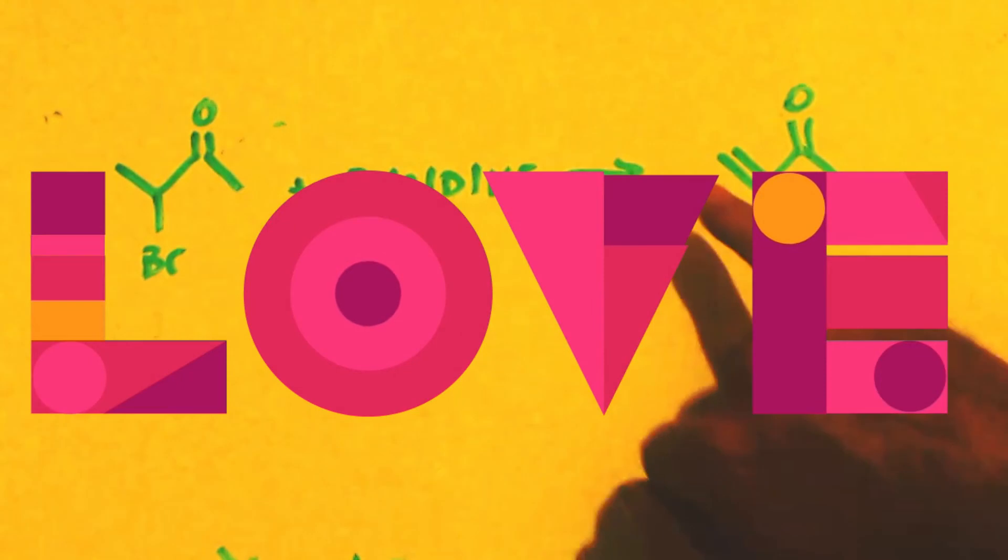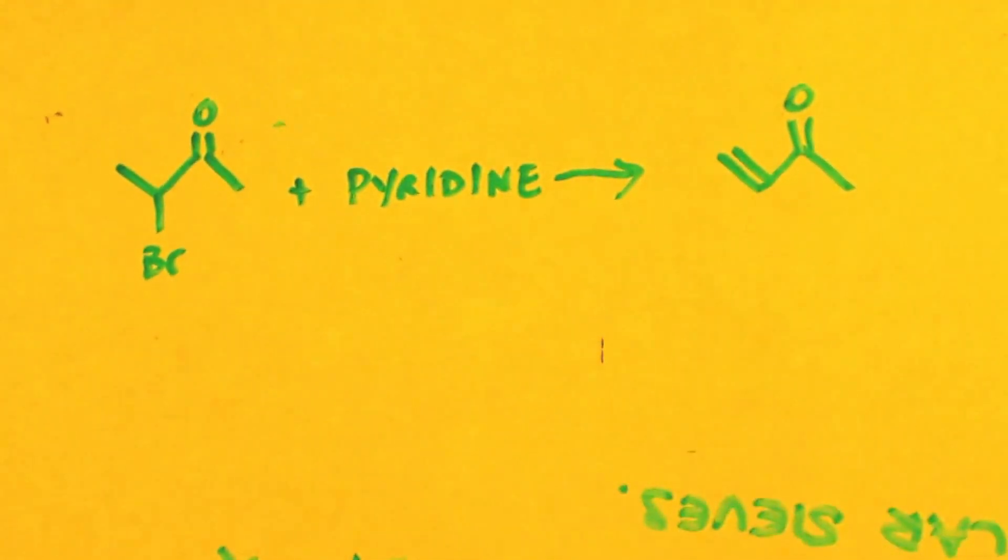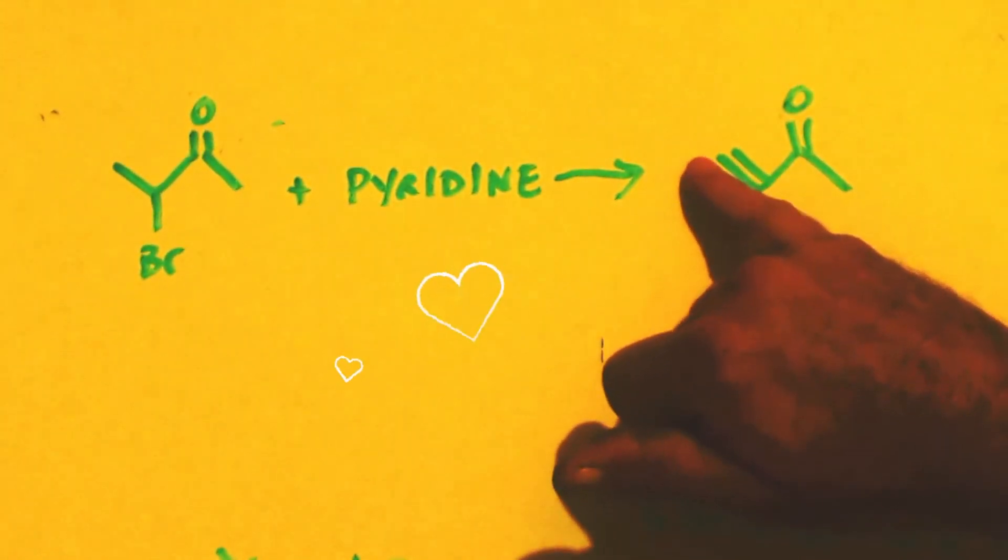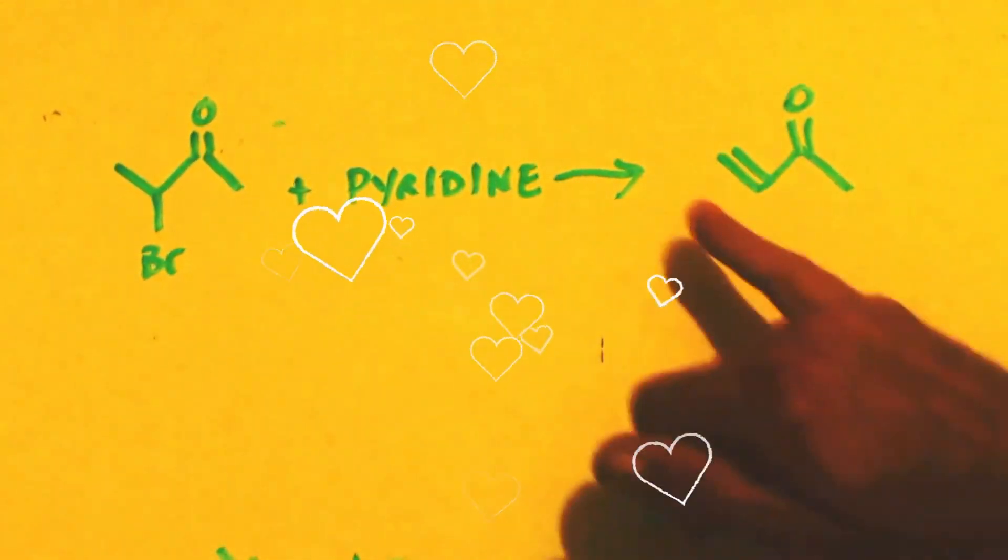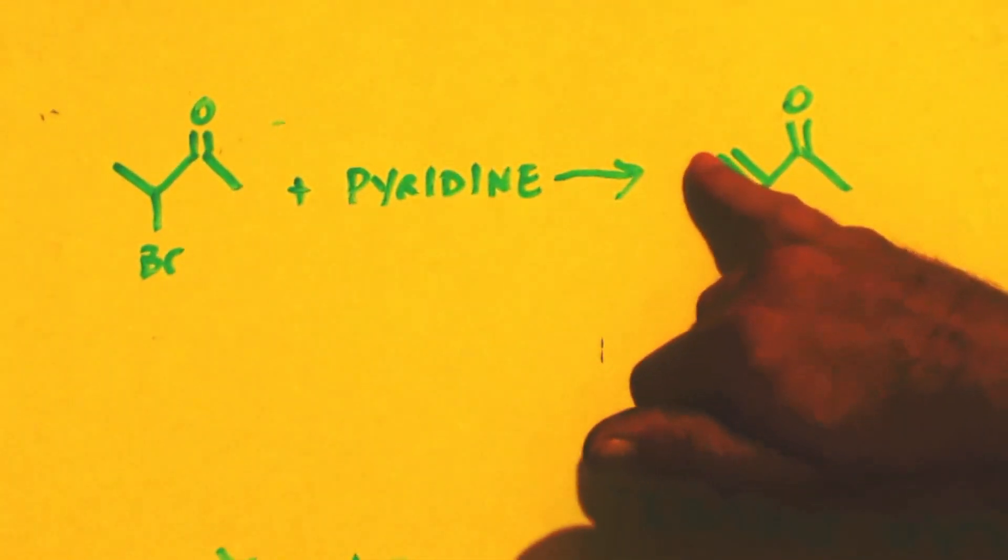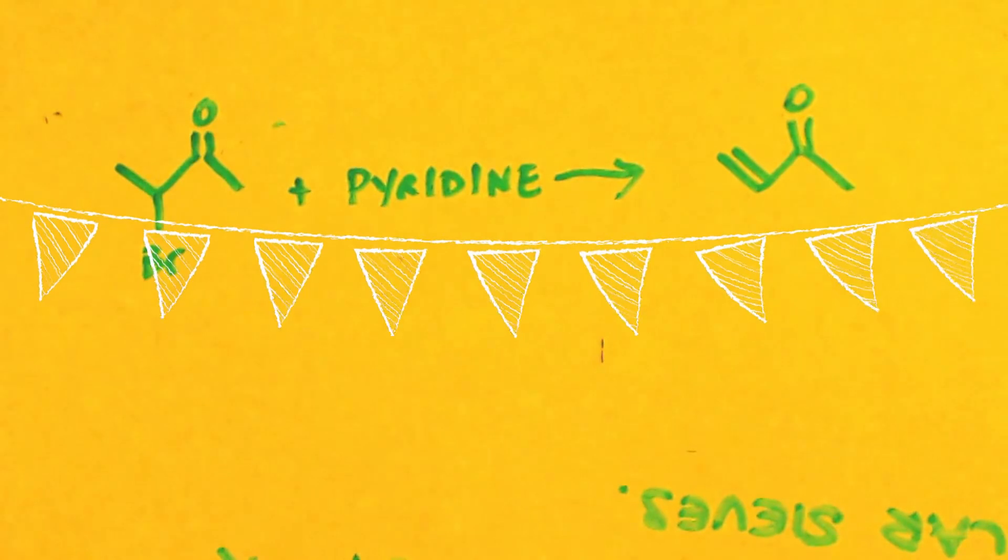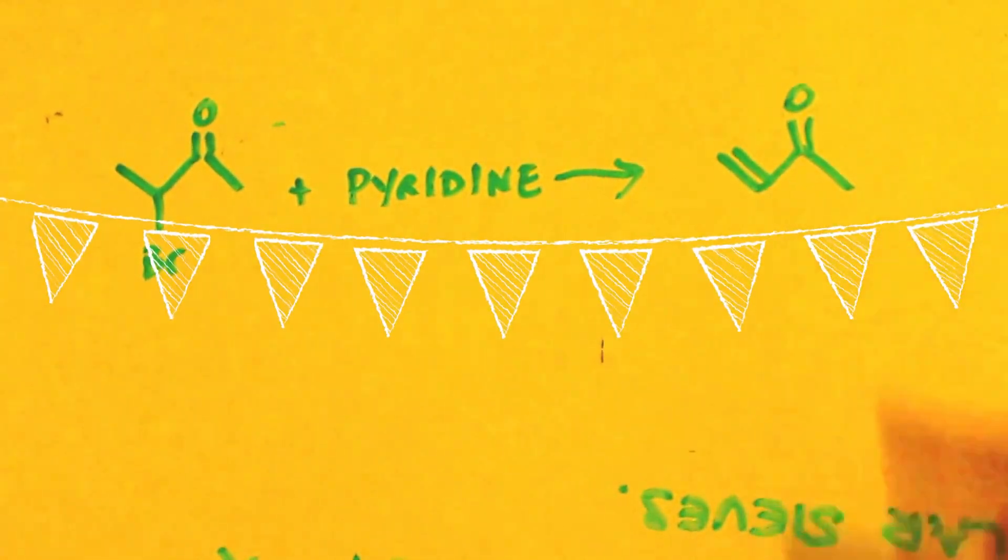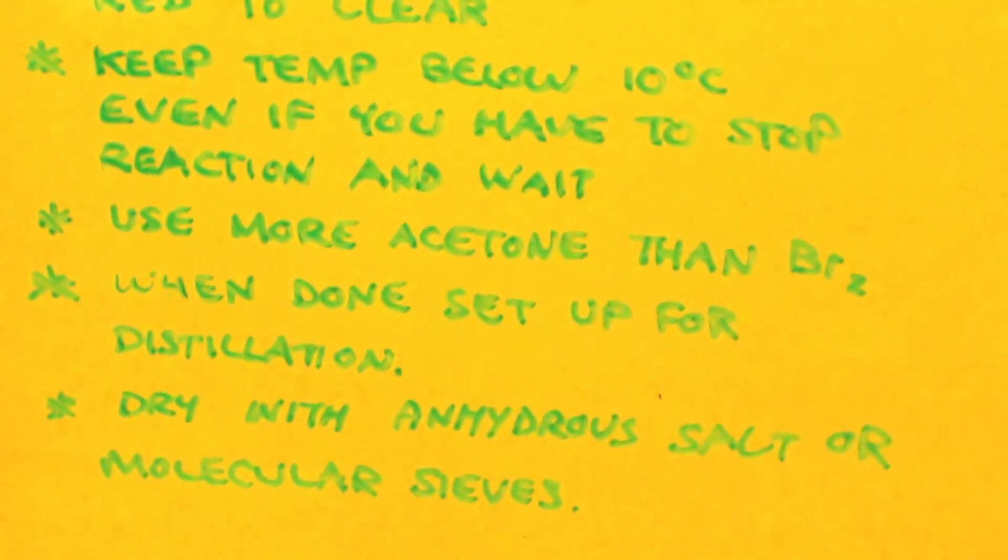Like a one-four addition where you can add to the terminal end of this. Usually you'd add to it right here because it's more substituted, and on here because of resonance you can add to the end. I think that's called one-four Michael's reaction or one-four addition reaction. Anyways, have a great day and always remember science is great.